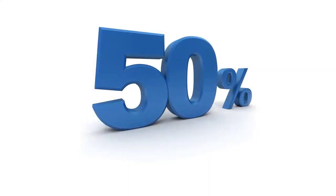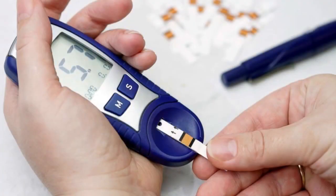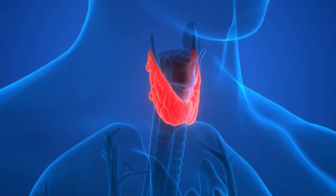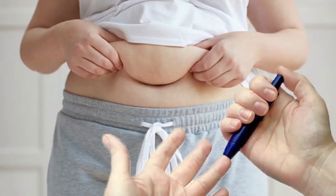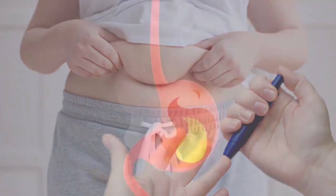As you know, endocrinology is predominantly 50% diabetes, then you have thyroid, and the rest constitute maybe less than 10%. Coming to diabetes, type 2 diabetes is quite common and the majority of them are obese. There is a lot of association found between diabetes, obesity, and GERD.